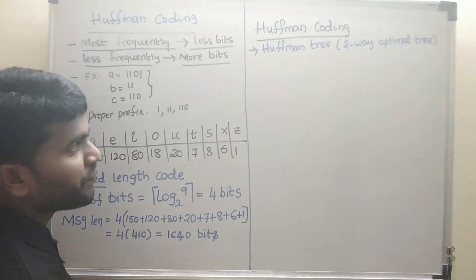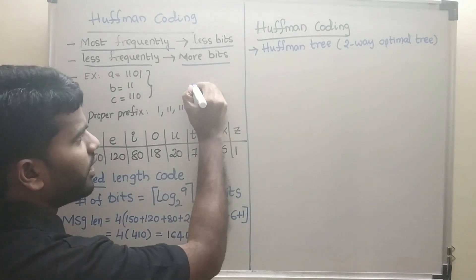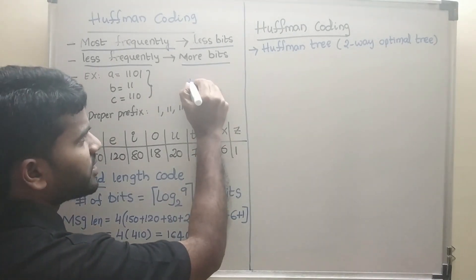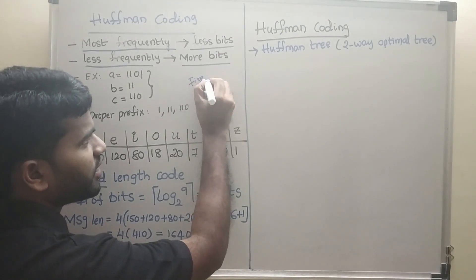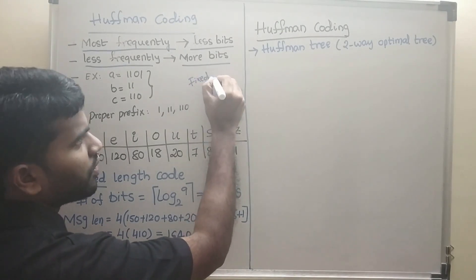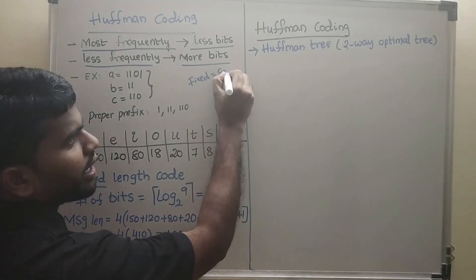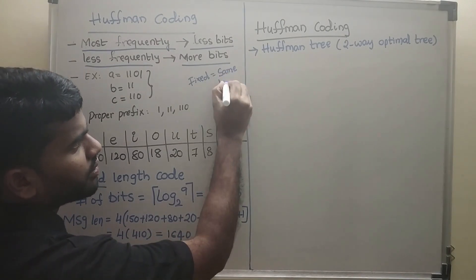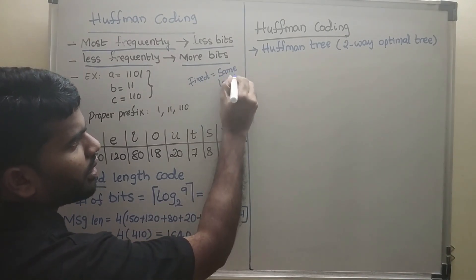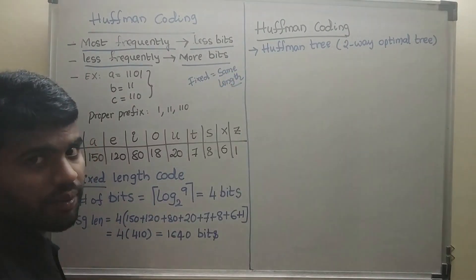Understand here: in fixed-length coding, what happens is all the characters have the same length. All the characters have the same bit length.